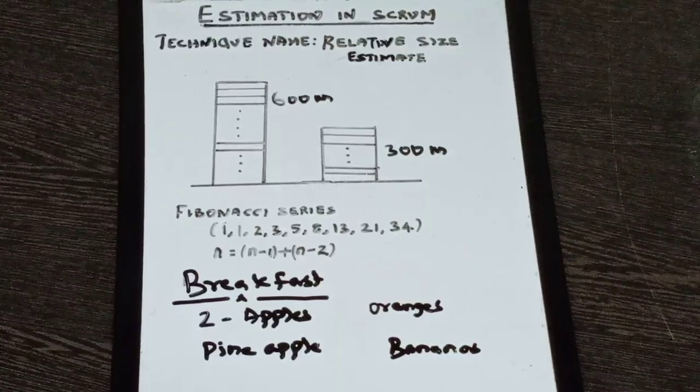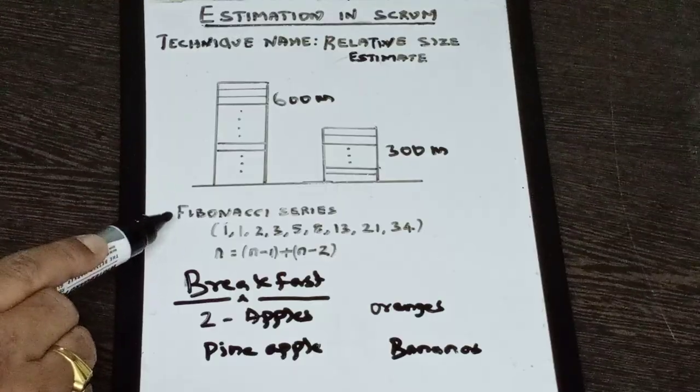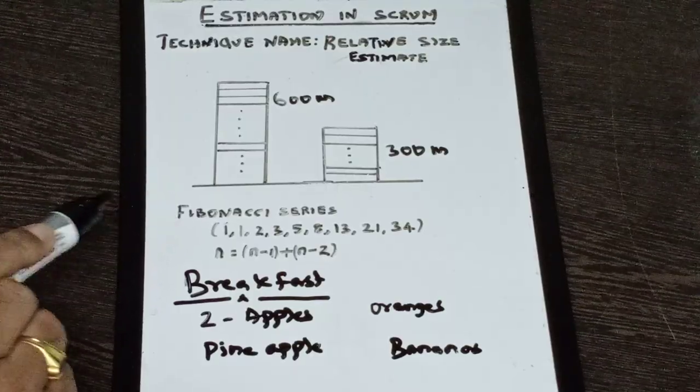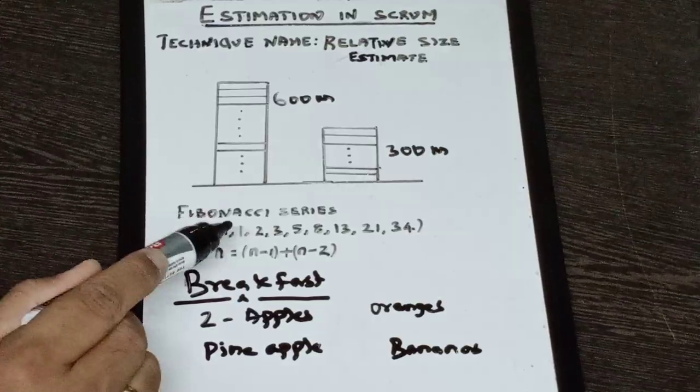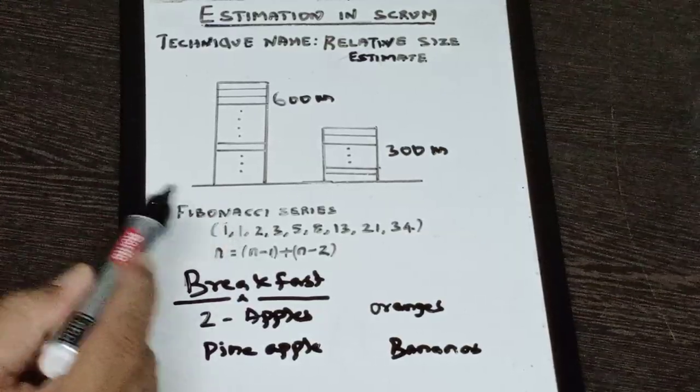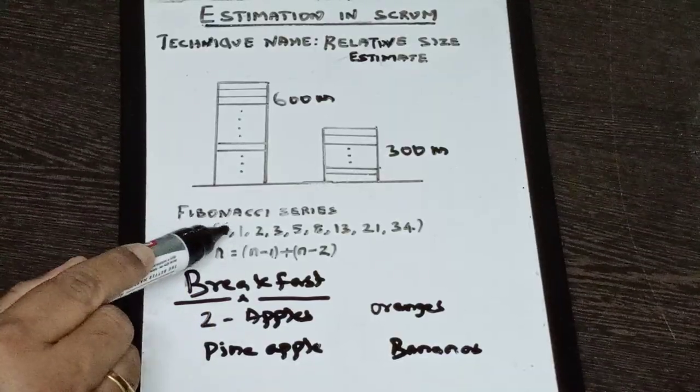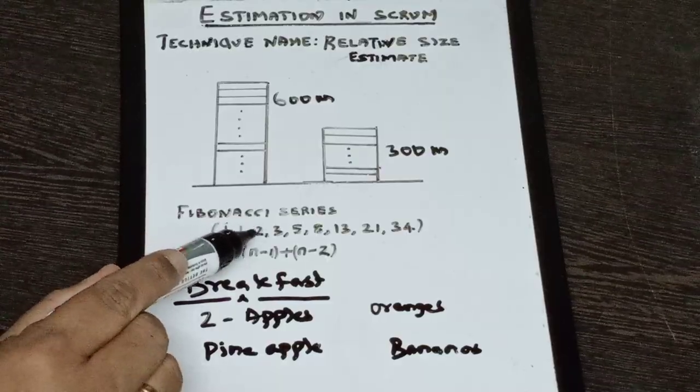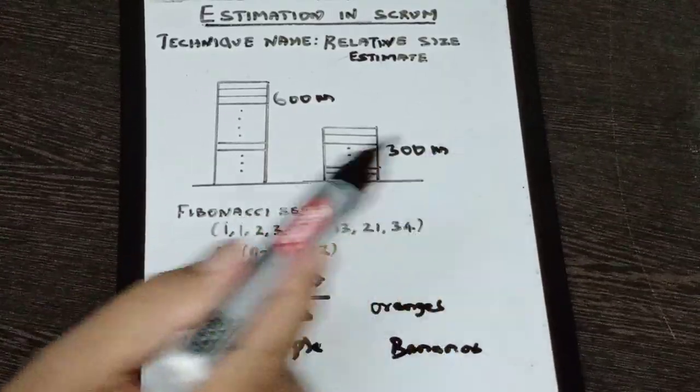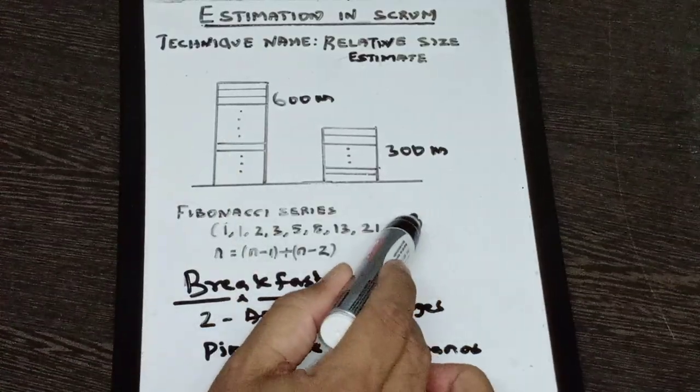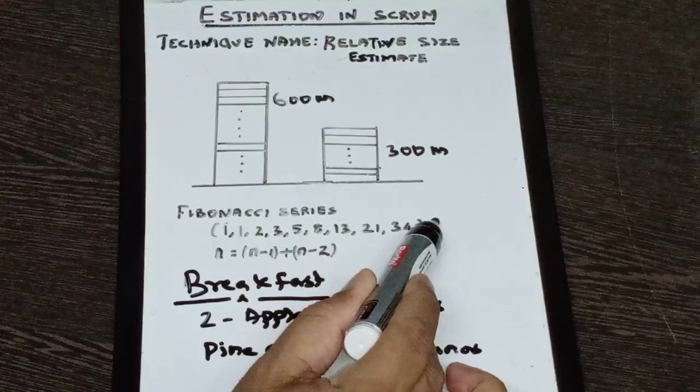And how we do that actually in Scrum is we use a very specific unique series called Fibonacci series. And Fibonacci series is, if you add the previous two numbers, you get the next number you are going to generate. For example, it starts with one and one. You add both, you get two. Two plus one, you get three. Three plus two, you get five. And the series goes on. And we normally stop at 34. Some people go to the next number, which is 55.